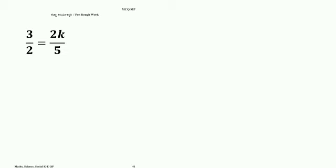You need not write these two, so write the ratios: 3 by 2 is equal to 2k by 5. Cross multiply—you need not actually do it, these are all mental work. 2 into 2, 4k is equal to 15, so k is equal to 15 by 4. So option A is correct.